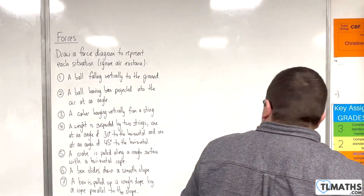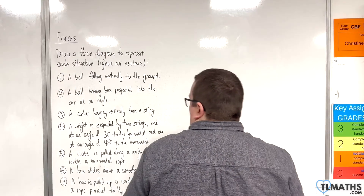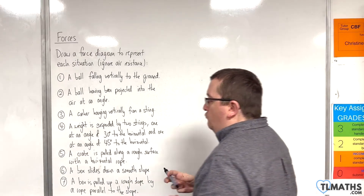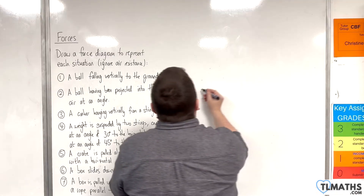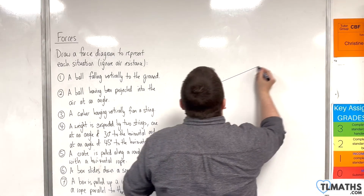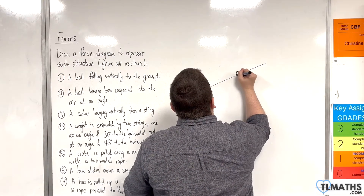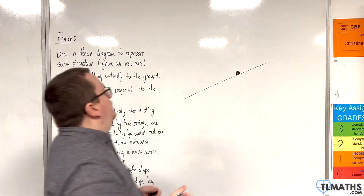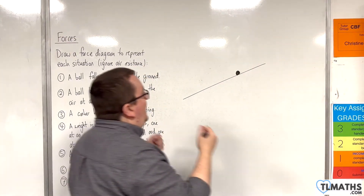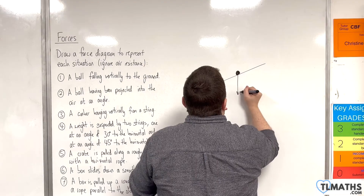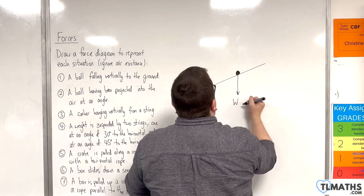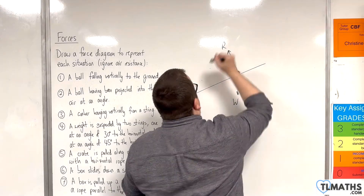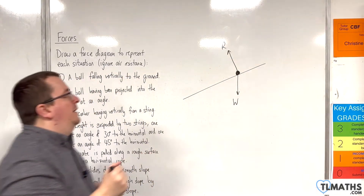For number seven: a box is pulled up a rough slope by a rope parallel to the slope. Here's the slope, and here is the particle — or the box. It will have its weight acting vertically downwards, just as in the previous example, and it will have a normal reaction force acting perpendicular to the surface.